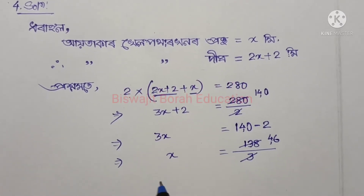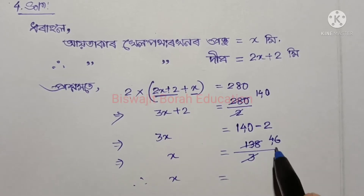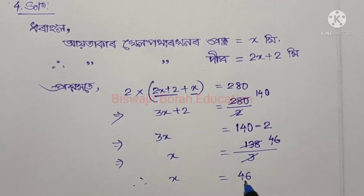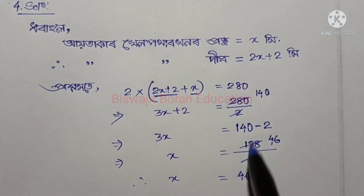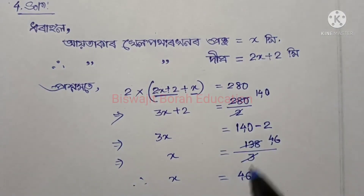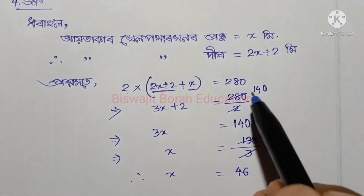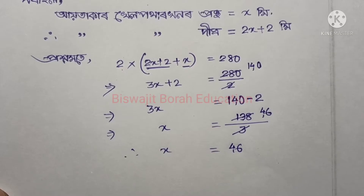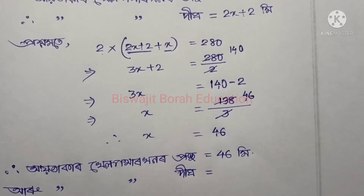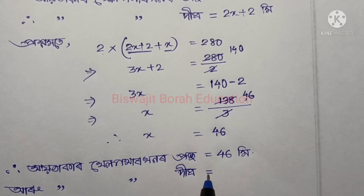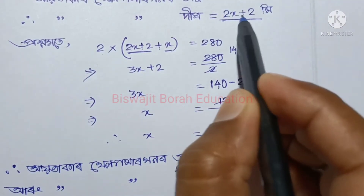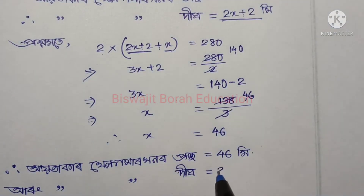Therefore x equals 46 meters. So if we write x equals 46 meters, that gives us the value we need. Confirming x equals 46 meters as the solution to this part of the problem.